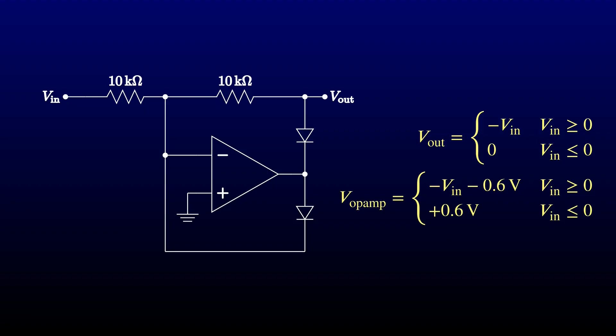At the zero crossings, rather than slamming into a supply rail, the op-amp output needs to jump only two diode drops. If we want to minimize that jump even more, we can use Schottky diodes here.